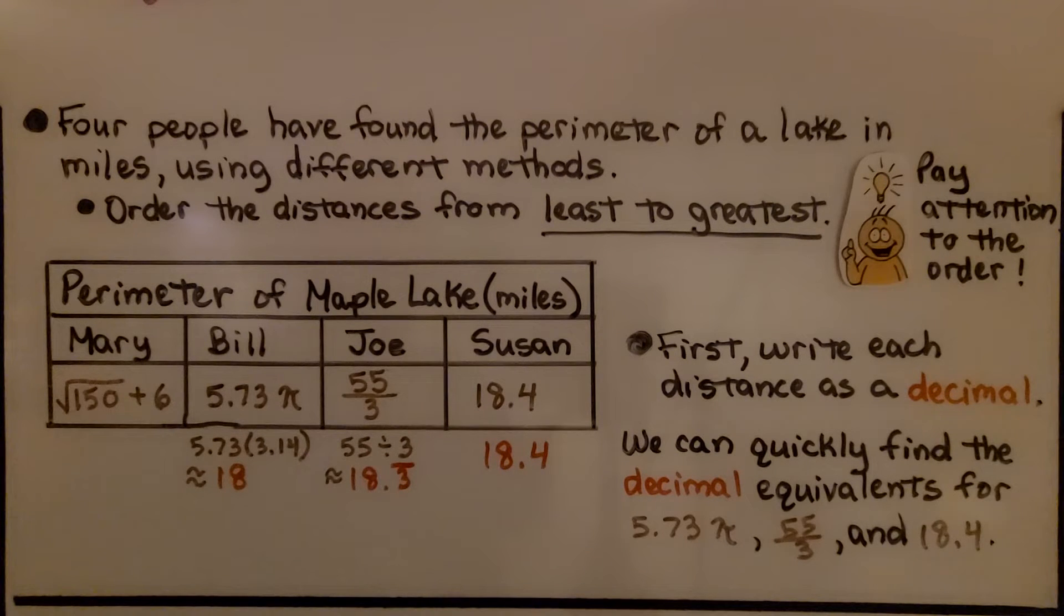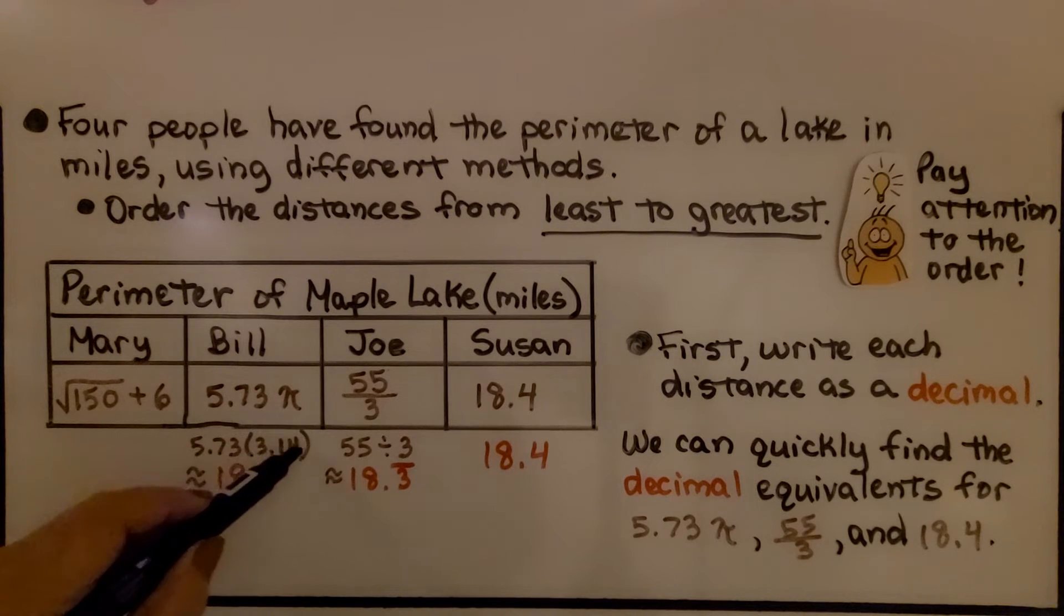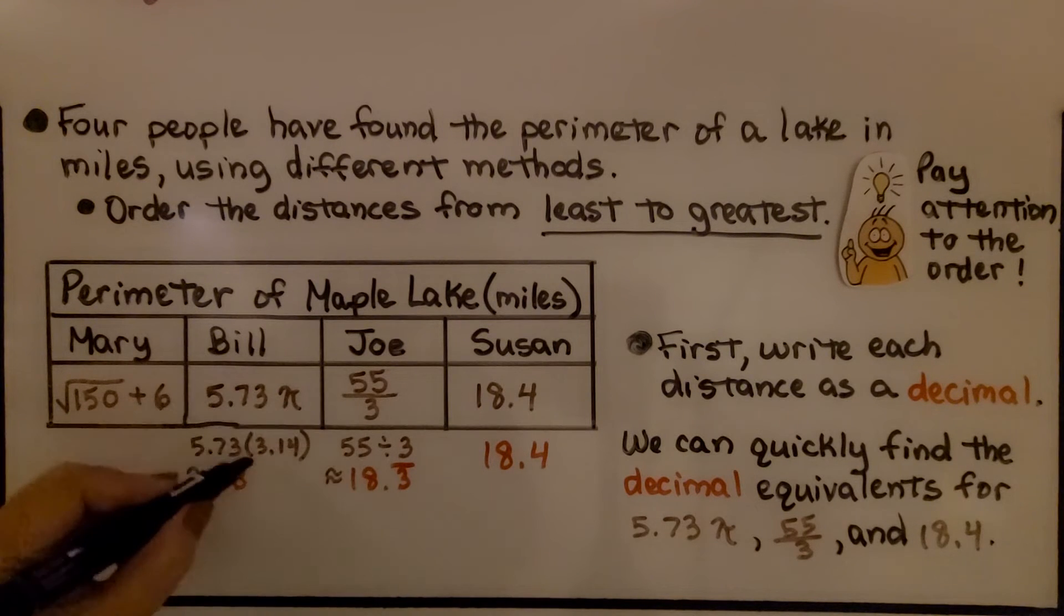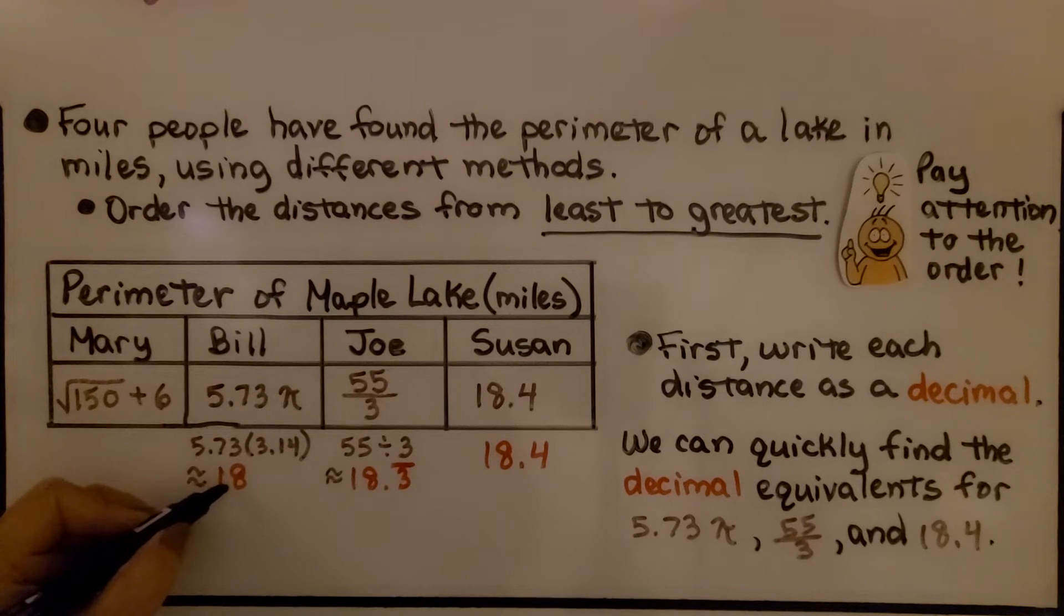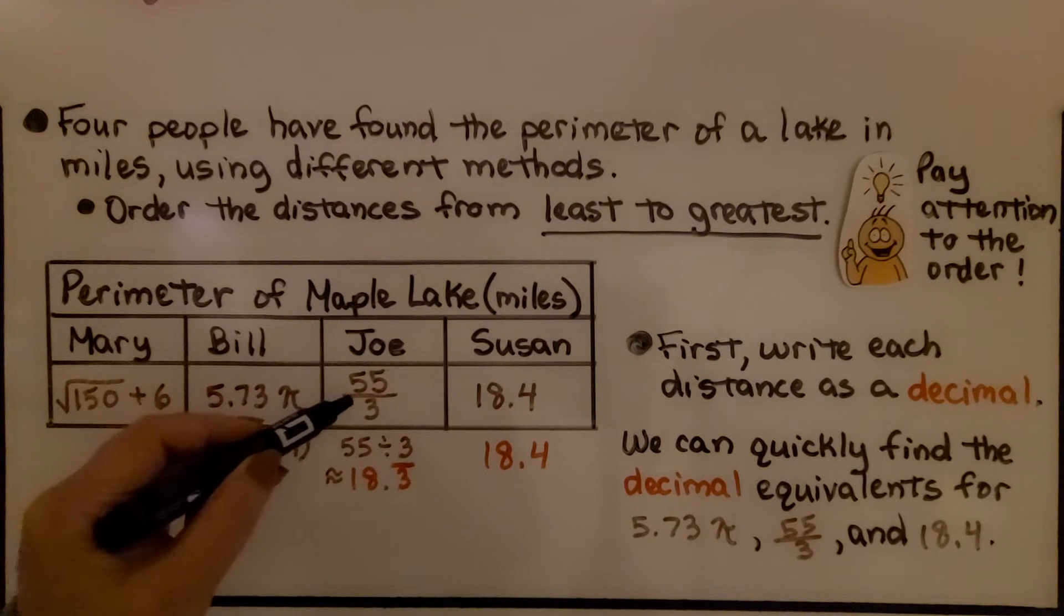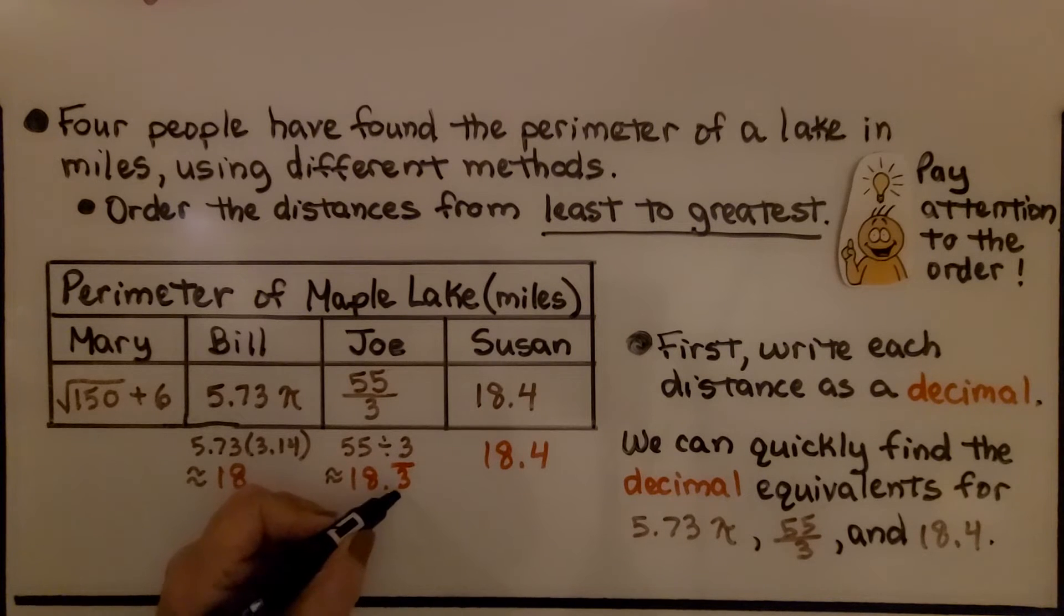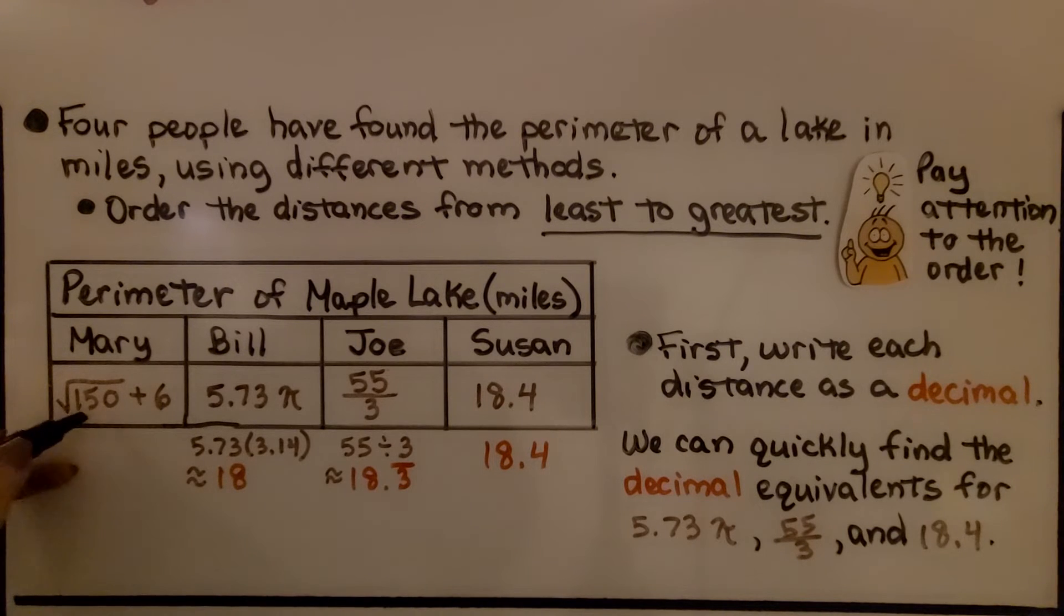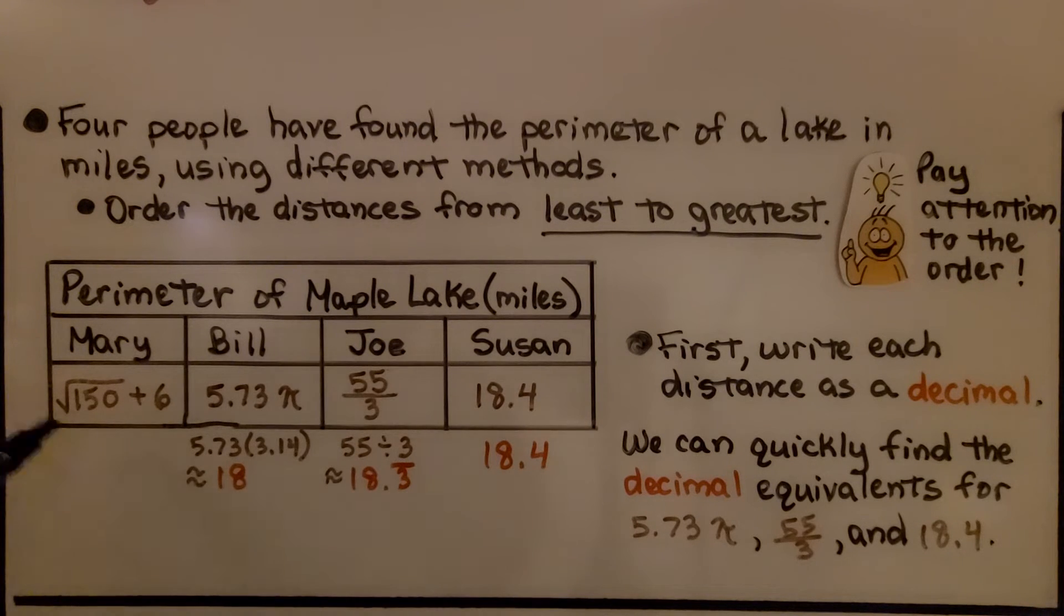We write each distance as a decimal, and we multiply 5.73 times 3.14 for pi. So remember, it's going to be approximate. It's not going to be exact, because those are the approximate digits of pi. We're going to get approximately 18 for Bill. 55 divided by 3 comes out to approximately 18.3 for Joe. And Susan is already in a decimal as 18.4. Now we need to figure out Mary.